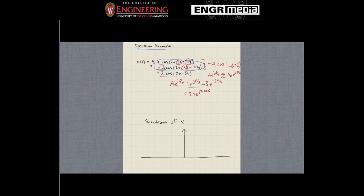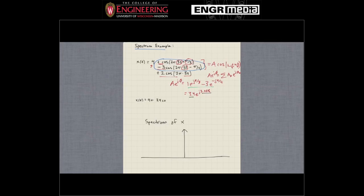At this point we're ready to rewrite the signal with the two combined sinusoids. We know A equals 3.4 and φ equals 2.068. Rewriting the whole signal: x(t) = 4 + 3.4·cos(2π·5t + 2.068) + 2·cos(2π·3t).